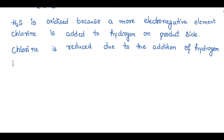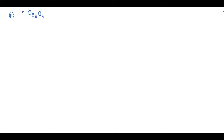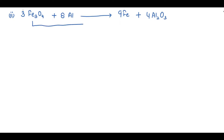Now the next problem: 3Fe₃O₄ plus 8Al gives rise to 9Fe plus 4Al₂O₃. Here we apply the concept of addition of oxygen. On the reactant side, iron is having oxygen, but on the product side we are not having oxygen with iron, so removal of oxygen is happening from iron.